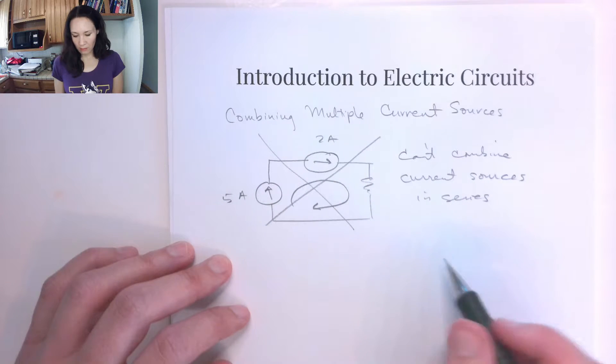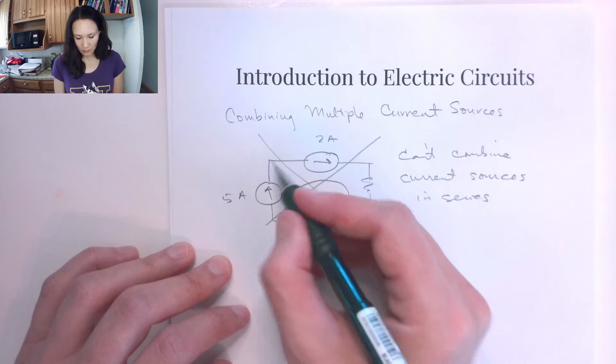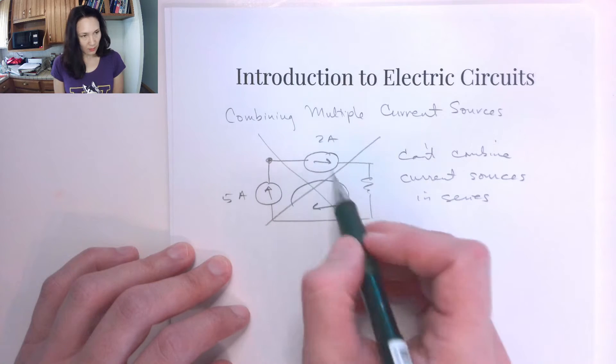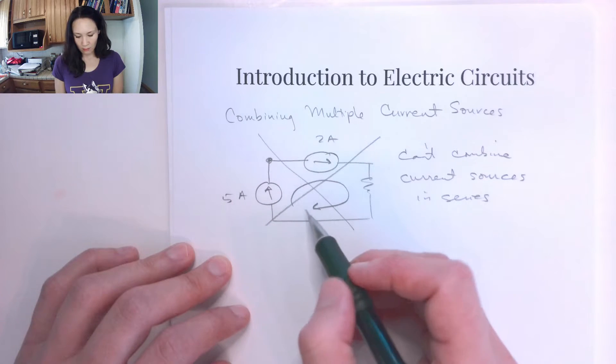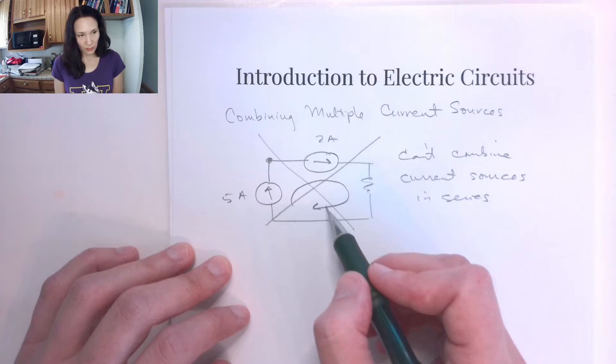Because it's a violation of KCL if we consider this to be a node. It's a violation of the physics of a circuit.